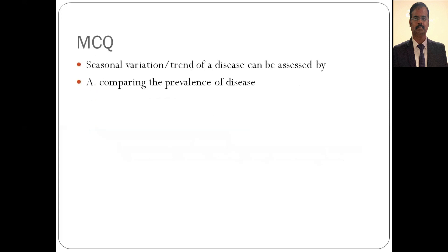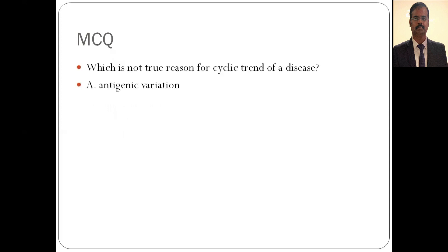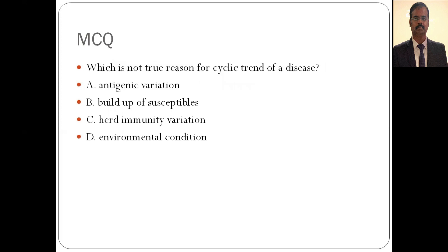An MCQ: 'Seasonal variation or trend of a disease can be assessed by?' — the answer is comparing the incidence, because when you want to see a trend you look at new cases, not prevalence. Another MCQ: 'Which is not a true reason for cyclical trend?' — environmental and climatic conditions are mainly responsible for seasonal trend, not cyclical trend. So the exception is environmental condition.